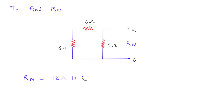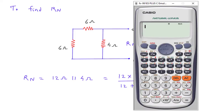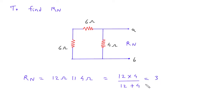So 12 ohm parallel with 4 ohm. This will be 12 into 4 divided by 12 plus 4, so it is 3 ohm. Rn is equal to 3 ohm.